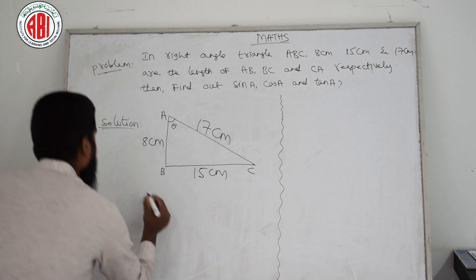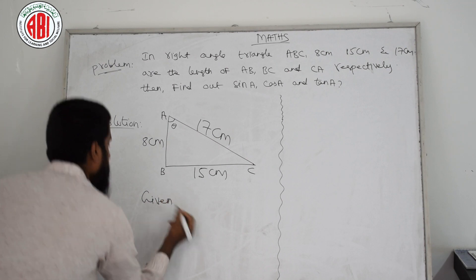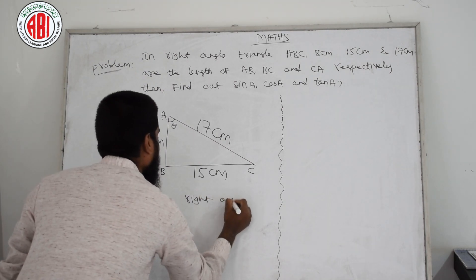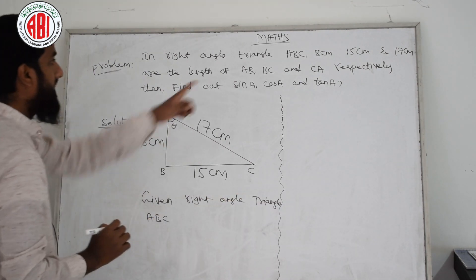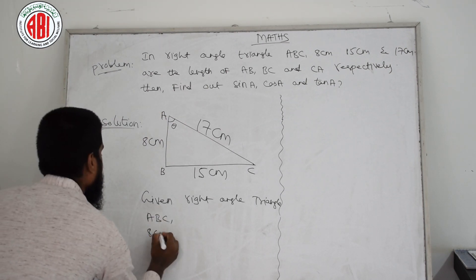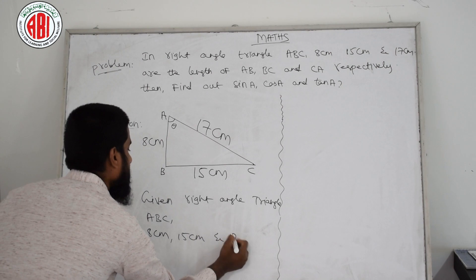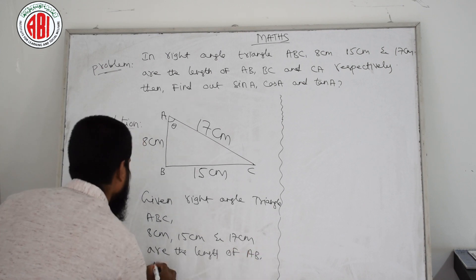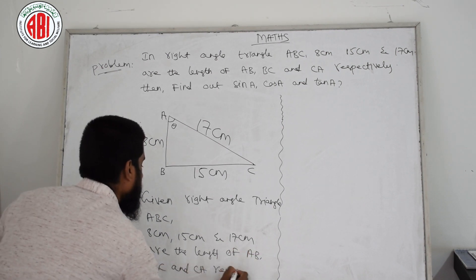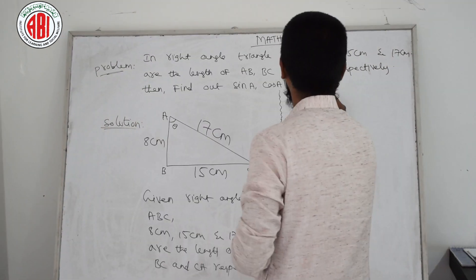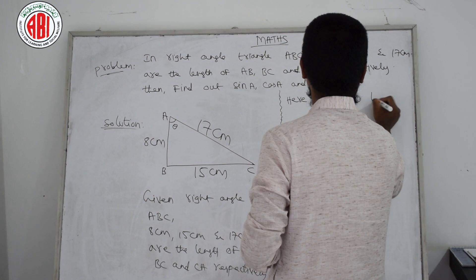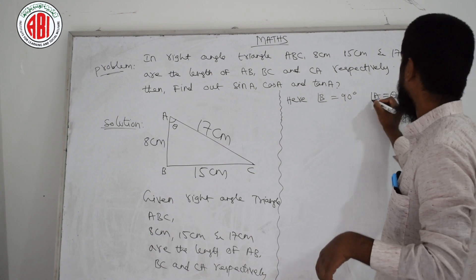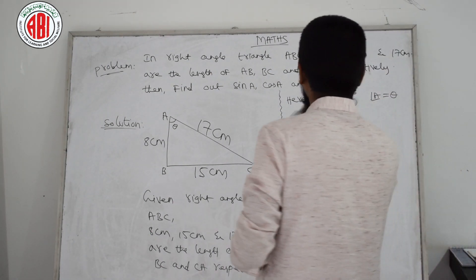I am writing the theoretical part. Given: right angle triangle ABC, where 8 cm, 15 cm, and 17 cm are the lengths of AB, BC, and CA respectively. Angle B is 90 degrees, and angle A equals theta. After that, we need to find what is asked.